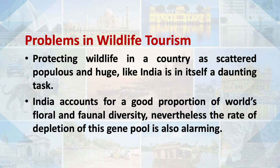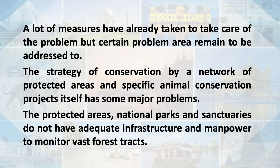Protecting wildlife in a country as scattered and huge as India is a daunting task. India accounts for a good proportion of the world's flora and fauna diversity; nevertheless, the rate of depletion of this gene pool is alarming. A lot of measures have been taken, but certain problem areas remain to be addressed. The strategy of conservation through a network of protected areas has some major problems — the national parks and sanctuaries do not have adequate infrastructure or manpower to monitor vast forest tracts.